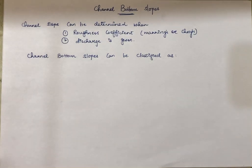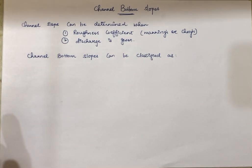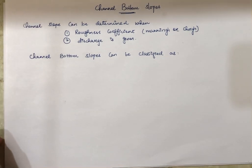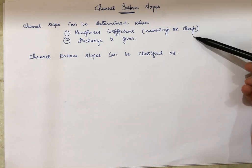After studying the theory of gradually varied flow profiles, we are now going to study how different kinds of flow profiles occur in a channel. Before that, it is mandatory to understand the different types of channel bottom slopes. The channel slope can be determined when the roughness coefficient — Manning's or Chezy's constant — is given along with the discharge.